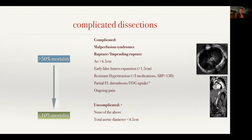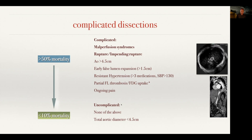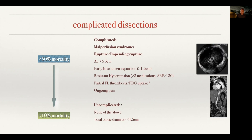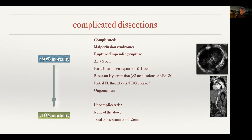It is critical to differentiate between a complicated dissection and an uncomplicated dissection. A complicated dissection is one where the patient is malperfusing — and that's based on clinical parameters, not imaging. The patient has an elevated lactate, renal dysfunction, paraplegia, or absent distal pulses. These are all signs of malperfusion.